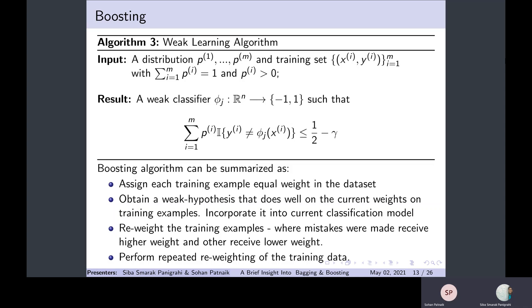The boosting algorithm can be summarized as follows: First, we assign each training example an equal weight, that is 1/m, as m is the number of training examples. Now we obtain a weak hypothesis that does well on the current weights on the training examples. As it is a weak hypothesis, the error is quite high - it may be less than 0.5, but it is quite high.